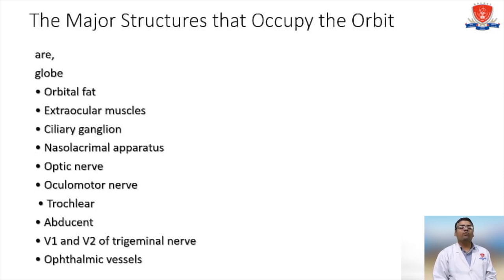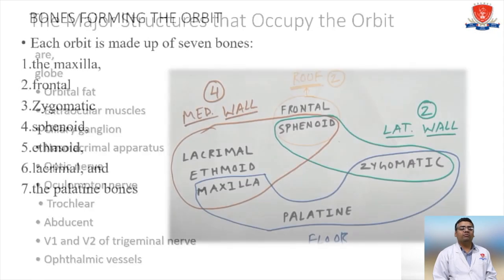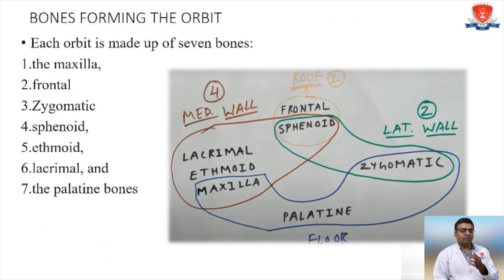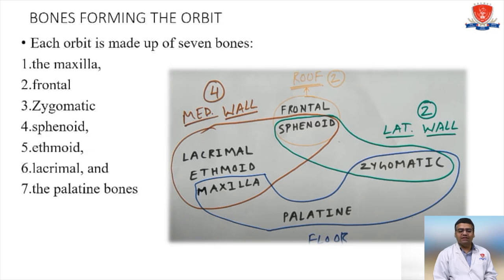Bones forming the orbit: each orbit is made up of seven bones. These are the maxilla, frontal, zygomatic, sphenoid, ethmoid, lacrimal, and the palatine bone.